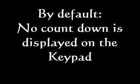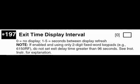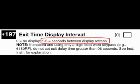Turning off the beep did cause one problem. Since by default there is no display on the keypad for countdown, you don't know how long it's going to be before the alarm is actually active. We can fix this with field 197 — Exit Time Display Interval. Default is 0, meaning no display. Your other options are 1 to 5, which indicate how many seconds between display updates. Entering a 1 will display every number — 10, 9, 8, 7. Entering a 5 means the update will be every 5 seconds: 20, 15, 10, 5, etc.